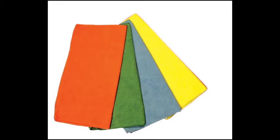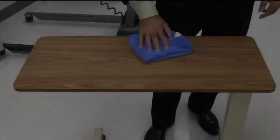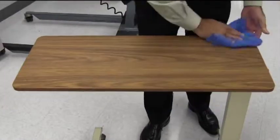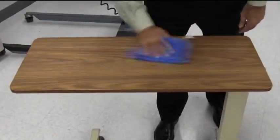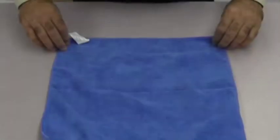With the Knuckle Buster multi-purpose microfiber towel, different surfaces, mirrors, and glass can be cleaned. They are easy to use, lightweight, and highly absorbent, and provide a lint-free, scratch-free, and streak-free experience. Available in different colors.